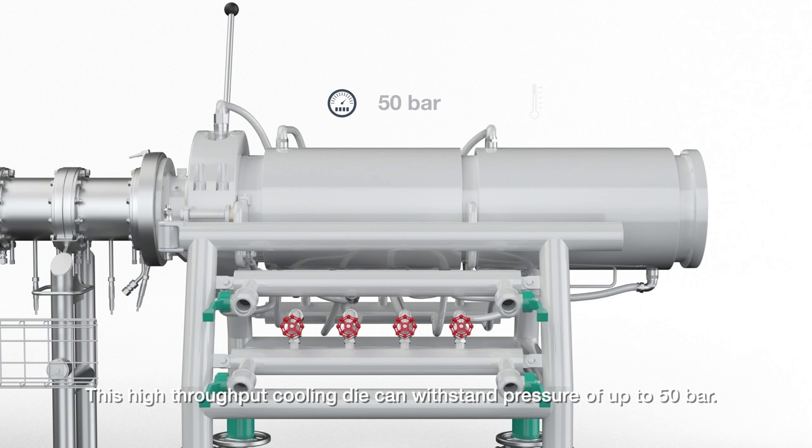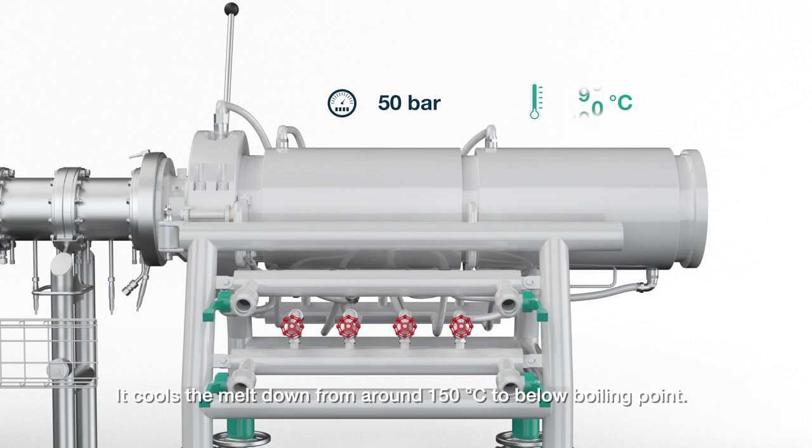This high throughput cooling die can withstand pressure of up to 50 bar. It cools the meltdown from around 150 degrees Celsius to below boiling point.